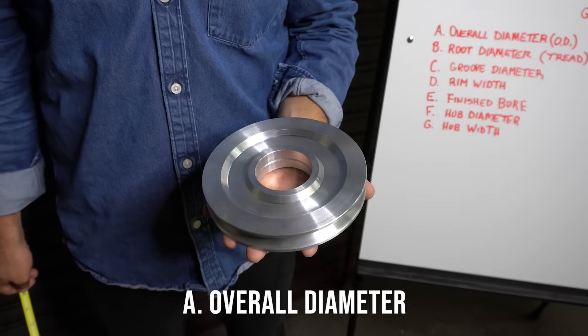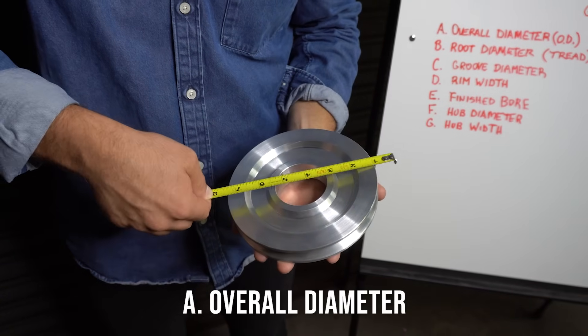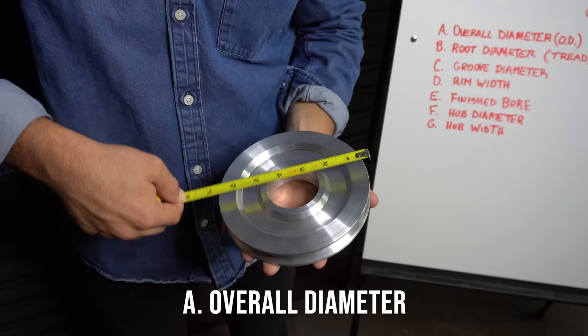This is how you measure the overall diameter. It is from one side of the shiv to the other. Six and a half inches.